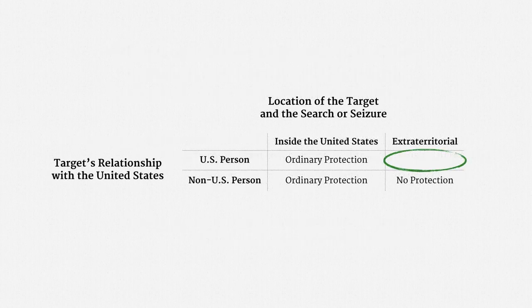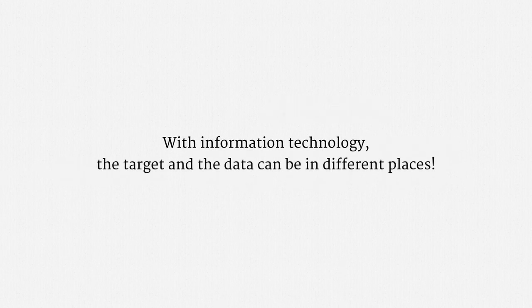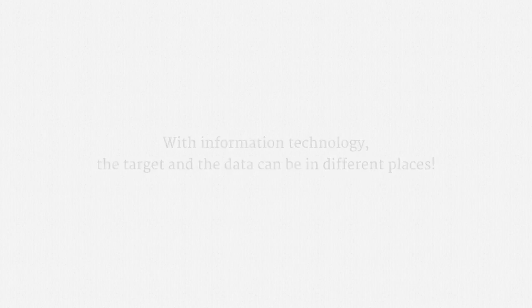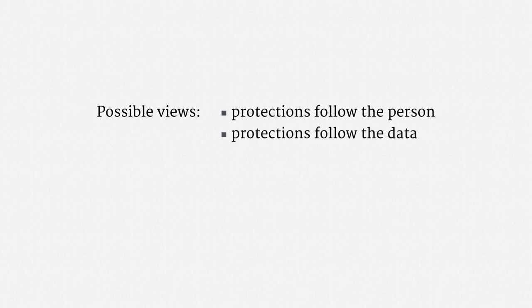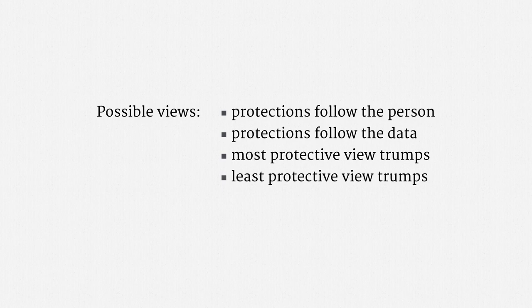Let's return to our 2x2 grid. In the final cell, there's some Fourth Amendment protection, and there are two differing approaches to that protection. That completes the picture for when the target and the search or seizure are geographically in the same place. Now let's add yet another wrinkle: with information technology, the target person and the data can be in different places. The law could be that constitutional protections follow the person, or that they follow the data. Or the law might be that the most protective view trumps, or the least protective view trumps. While legal scholars argue all of these positions, I want to give my best assessment of where the courts are.